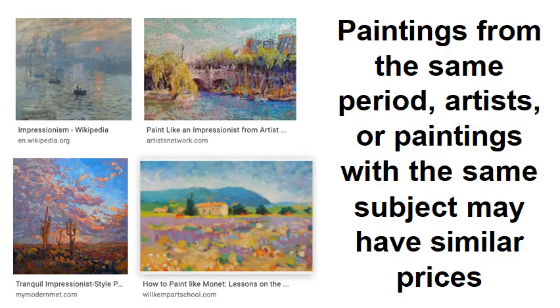Number five: prices of similar pieces. Paintings from the same period, by the same artist, or with the same subject may have similar prices. For example, these impressionist artworks all come from the same art movement and the same era, so their prices are roughly the same.